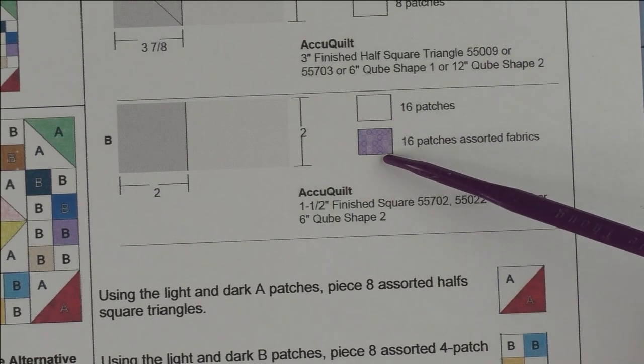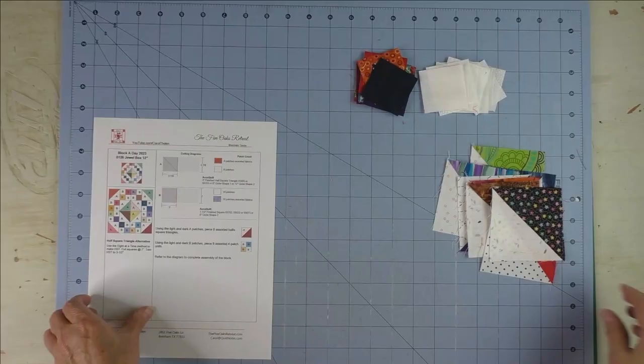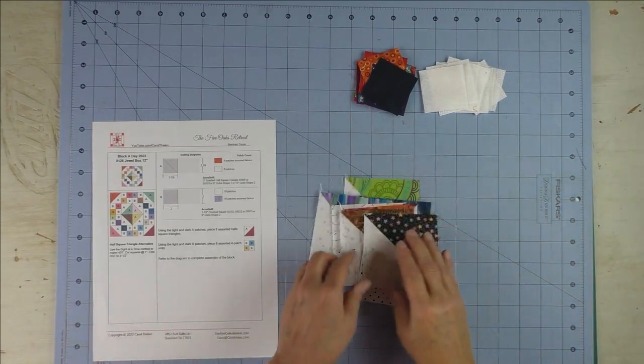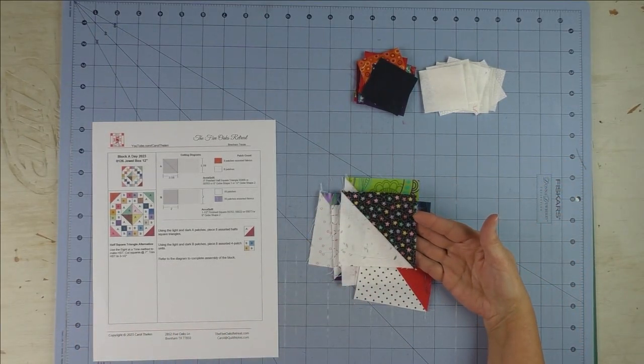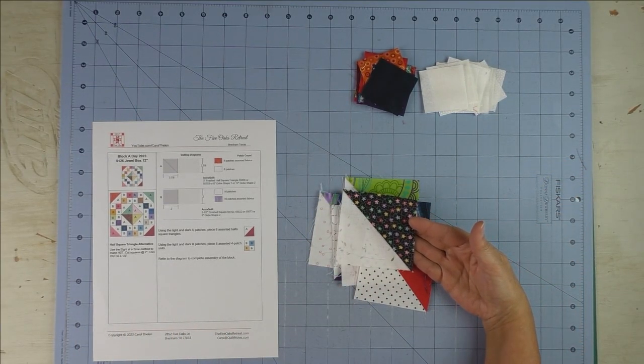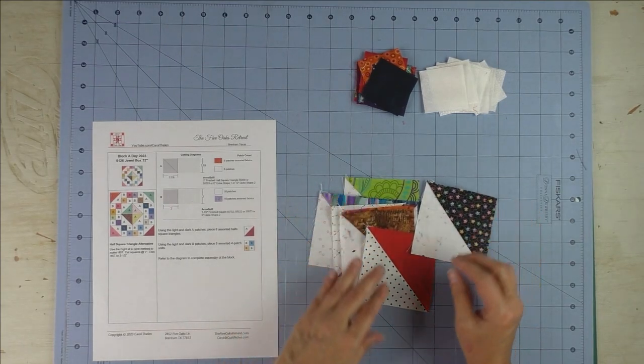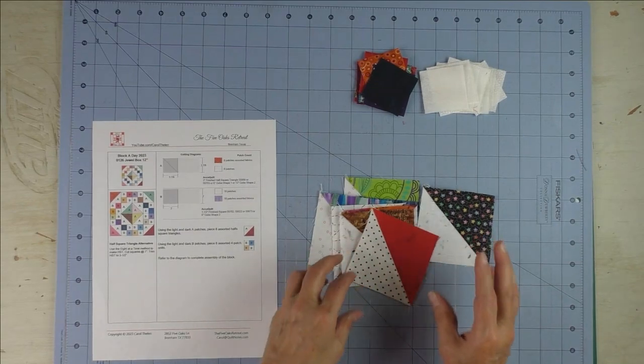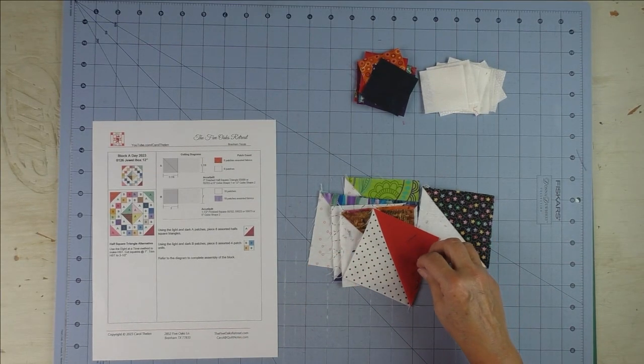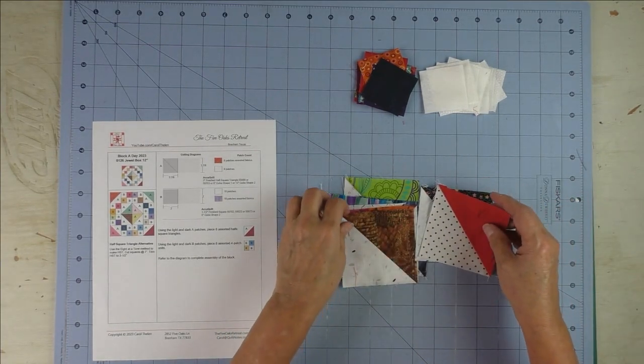I went through my scrap bag. We're working right now on the half square triangle sew along, so I had a lot of leftover half square triangles because I always make more than I need. These were done with low volume prints.